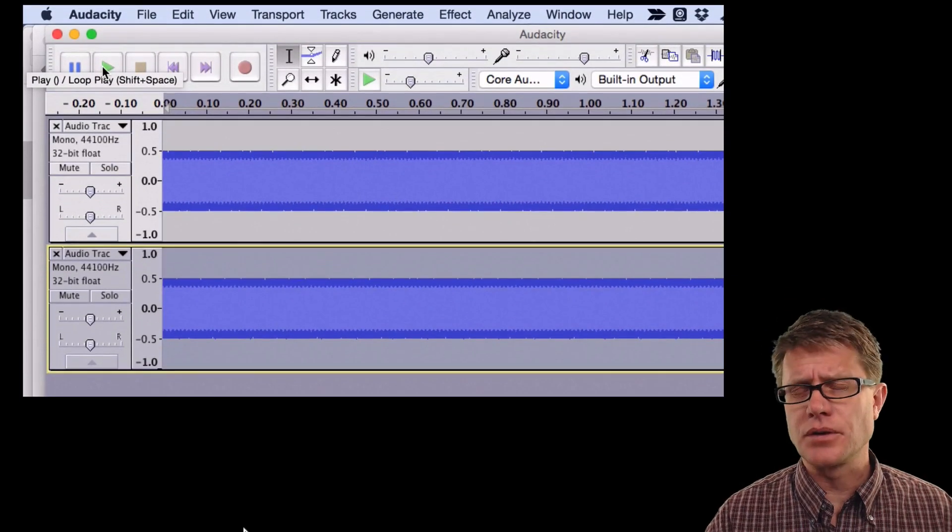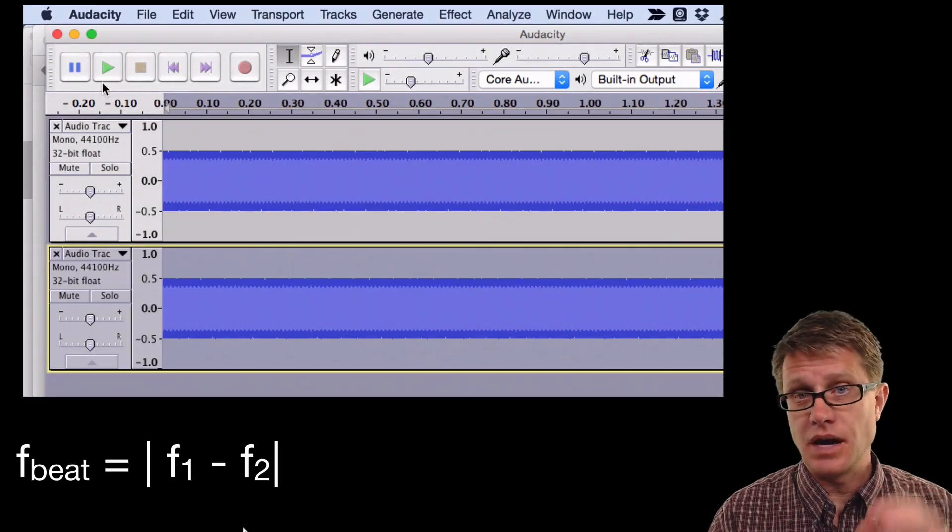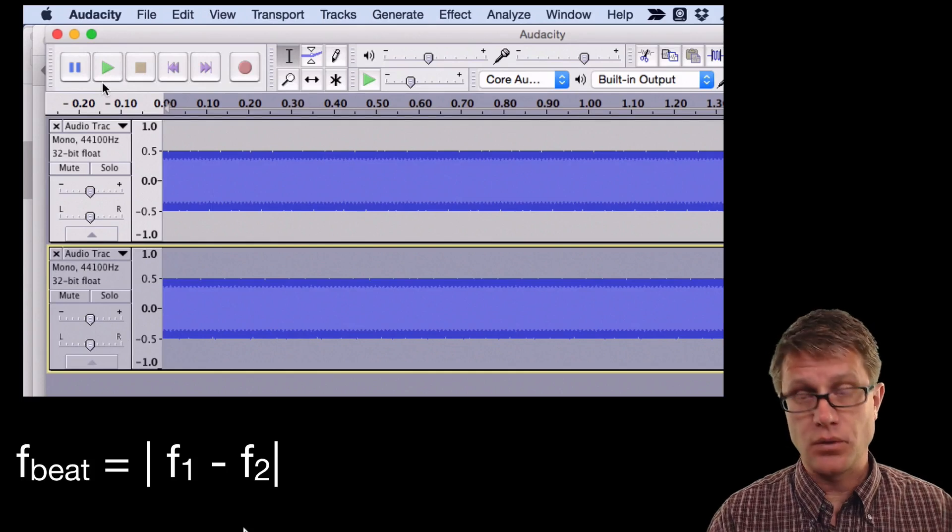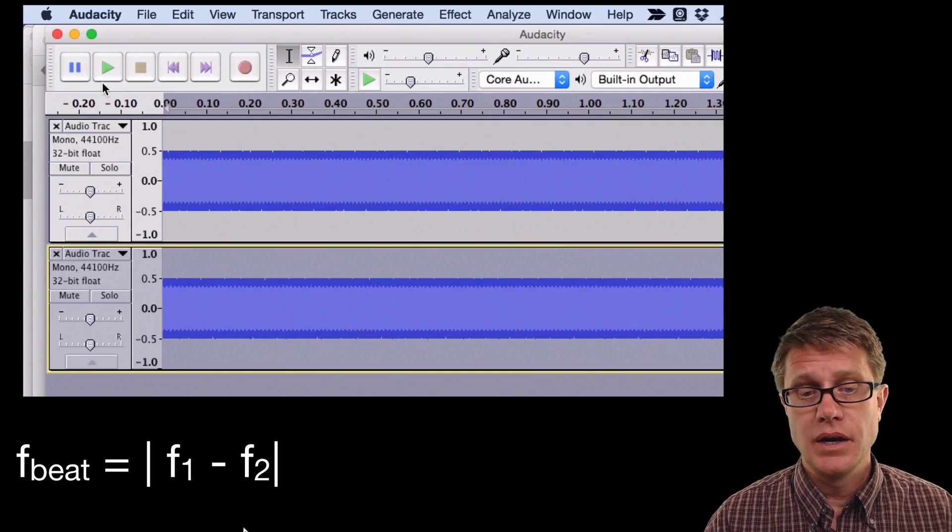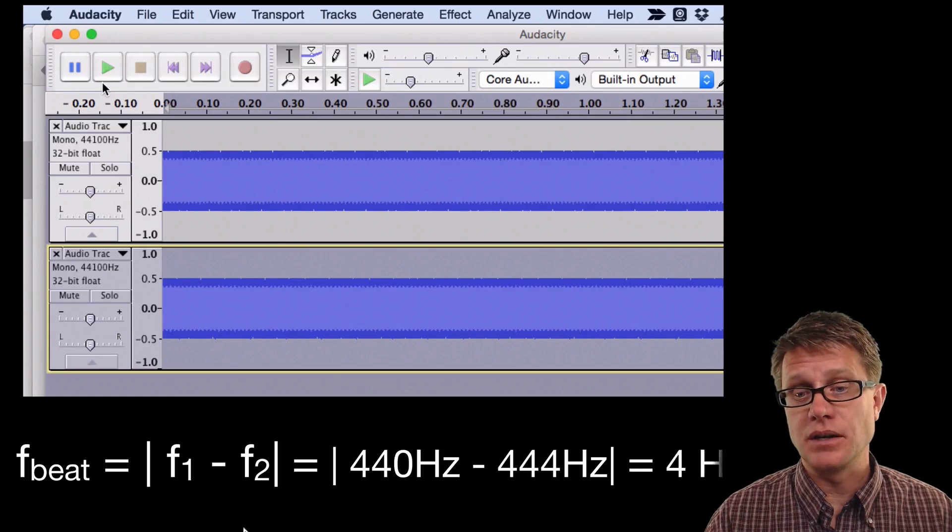So now you can hear those beats or those changes in the amplitude. Now let's calculate what the frequency of the beat should be. So frequency of the beat is going to be f1 minus f2. And so what were the two frequencies? Well we had 440 and 444. And so if I put those two values in, what is my frequency of the beat going to be? It is simply going to be 4 hertz.